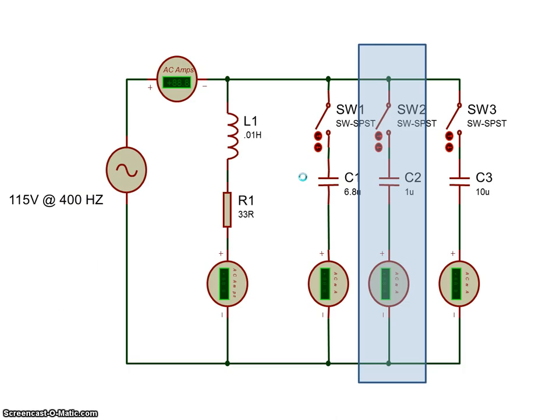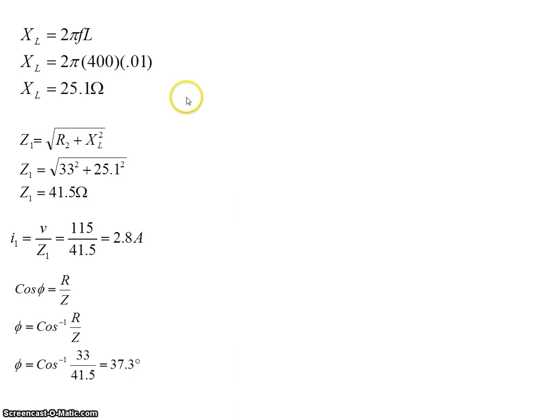Now let's put a capacitor in parallel. So I'm going to put a 1 microfarad capacitor in parallel with the winding and the resistor. Well these calculations don't change. So the XL is still 25.1, Z is still 41.5, and we still have 2.8 amps running in that branch of the circuit.